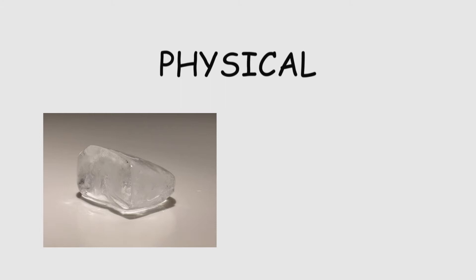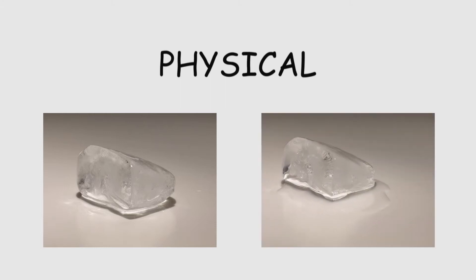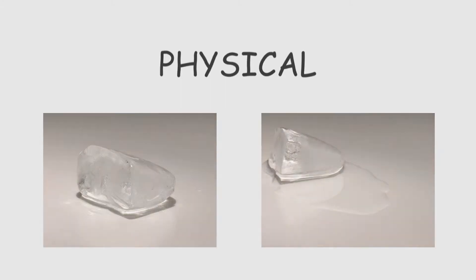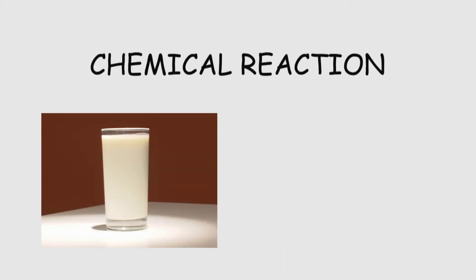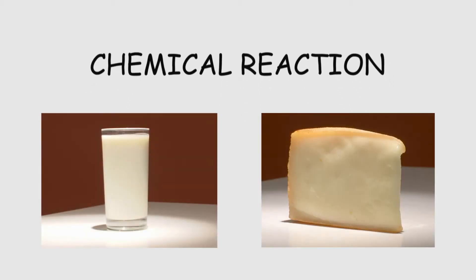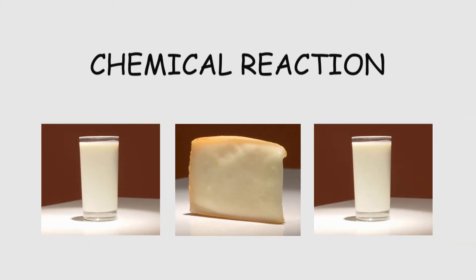When a change involves a chemical reaction, it generally can't be reversed. Turning liquid milk to solid cheese is a good example — the cheese can never go back to being milk again.